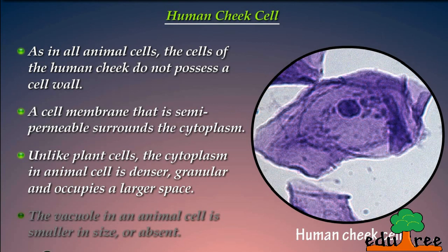Unlike plant cells, the cytoplasm in animal cell is denser, granular, and occupies a larger space.